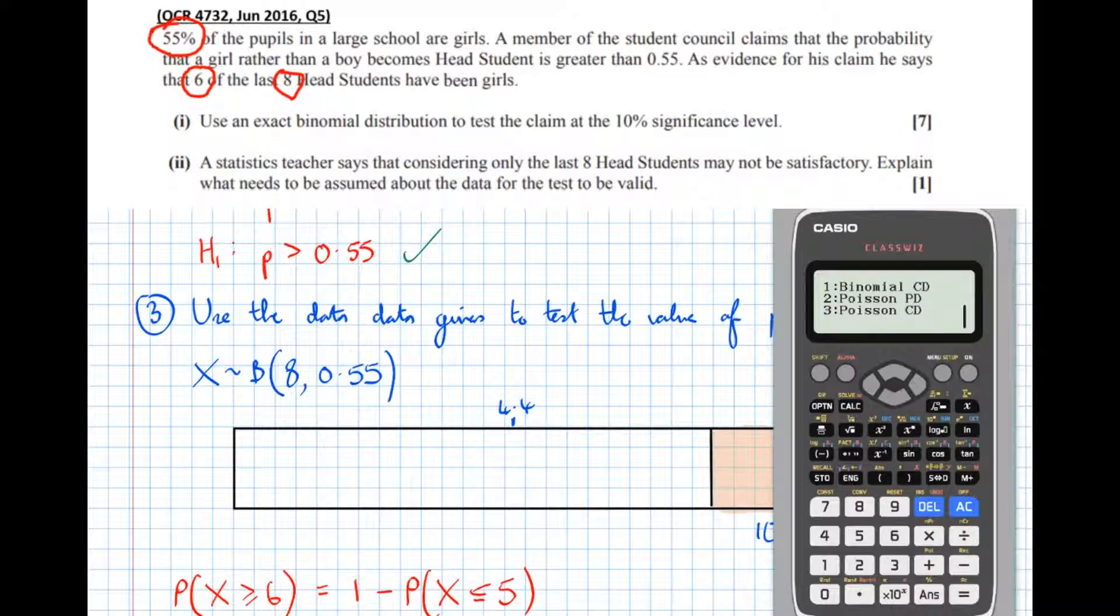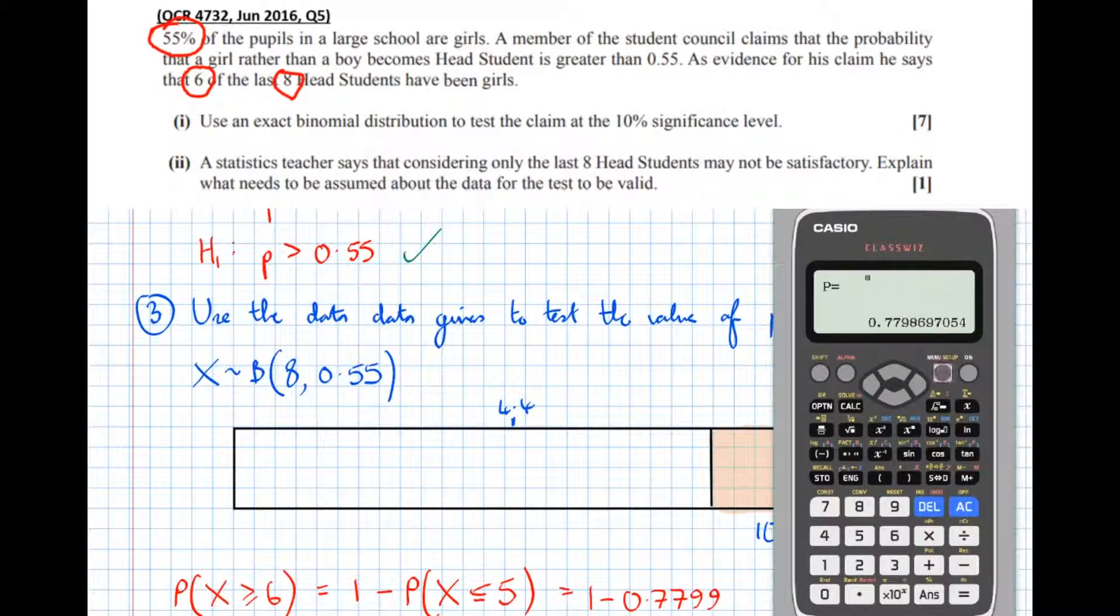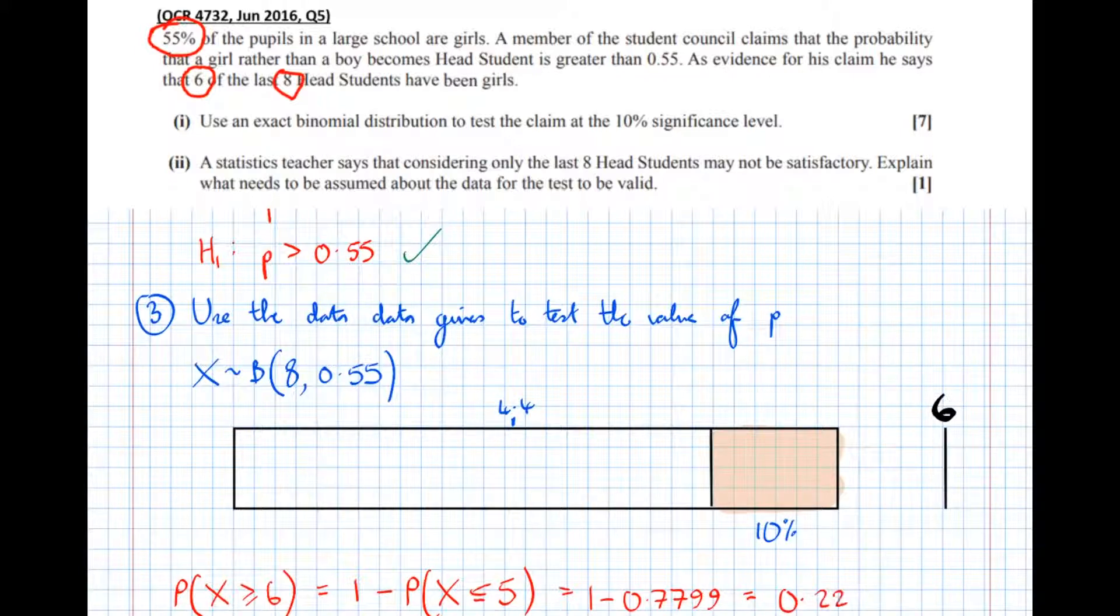So binomial cumulative distribution. Variable x is less than or equal to five. The number of trials was eight. And it was 0.55. So one minus 0.7799 equals one minus 0.7799. And we'll do one minus that to get 0.220.